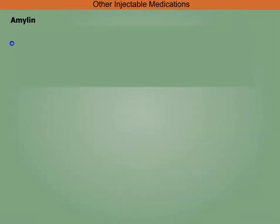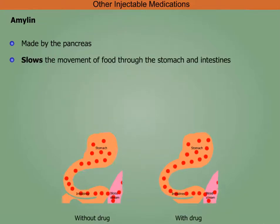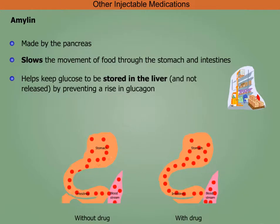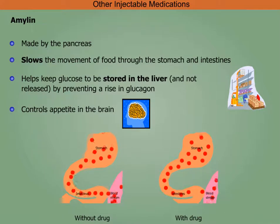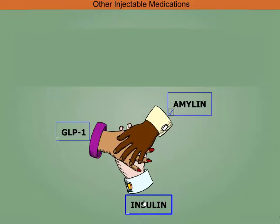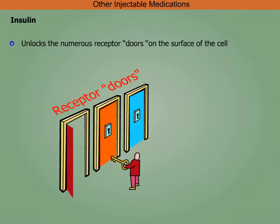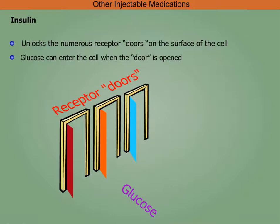Amylin, made by the pancreas, slows the movement of food through the stomach and intestines, helps keep glucose stored in the liver by preventing a rise in glucagon, and controls appetite in the brain. Insulin unlocks the numerous receptor doors on the surface of the cell, allowing glucose to enter when the door is opened.